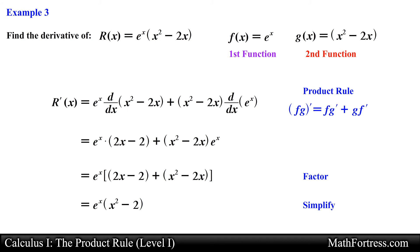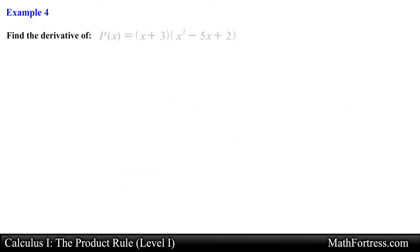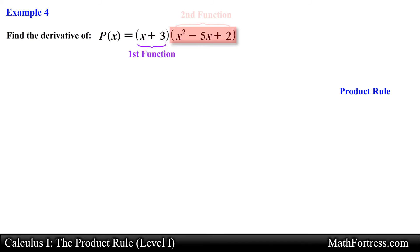Now let's try finding the derivative of a product of polynomials. Find the derivative of p of x equals the quantity x plus 3 times the quantity x squared minus 5x plus 2. This was the last function we worked on from the previous video. We can actually find the derivative of this function by using the product rule. Let's go ahead and assign the binomial as our f of x and the trinomial as our g of x.